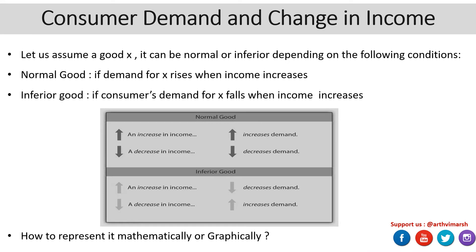Now let's discuss consumer demand and the change in income — what happens when your income M is going to change. We know that the budget line of a consumer is given as: price times the quantity of commodity x1, plus the price of the other commodity times the quantity of commodity x2.